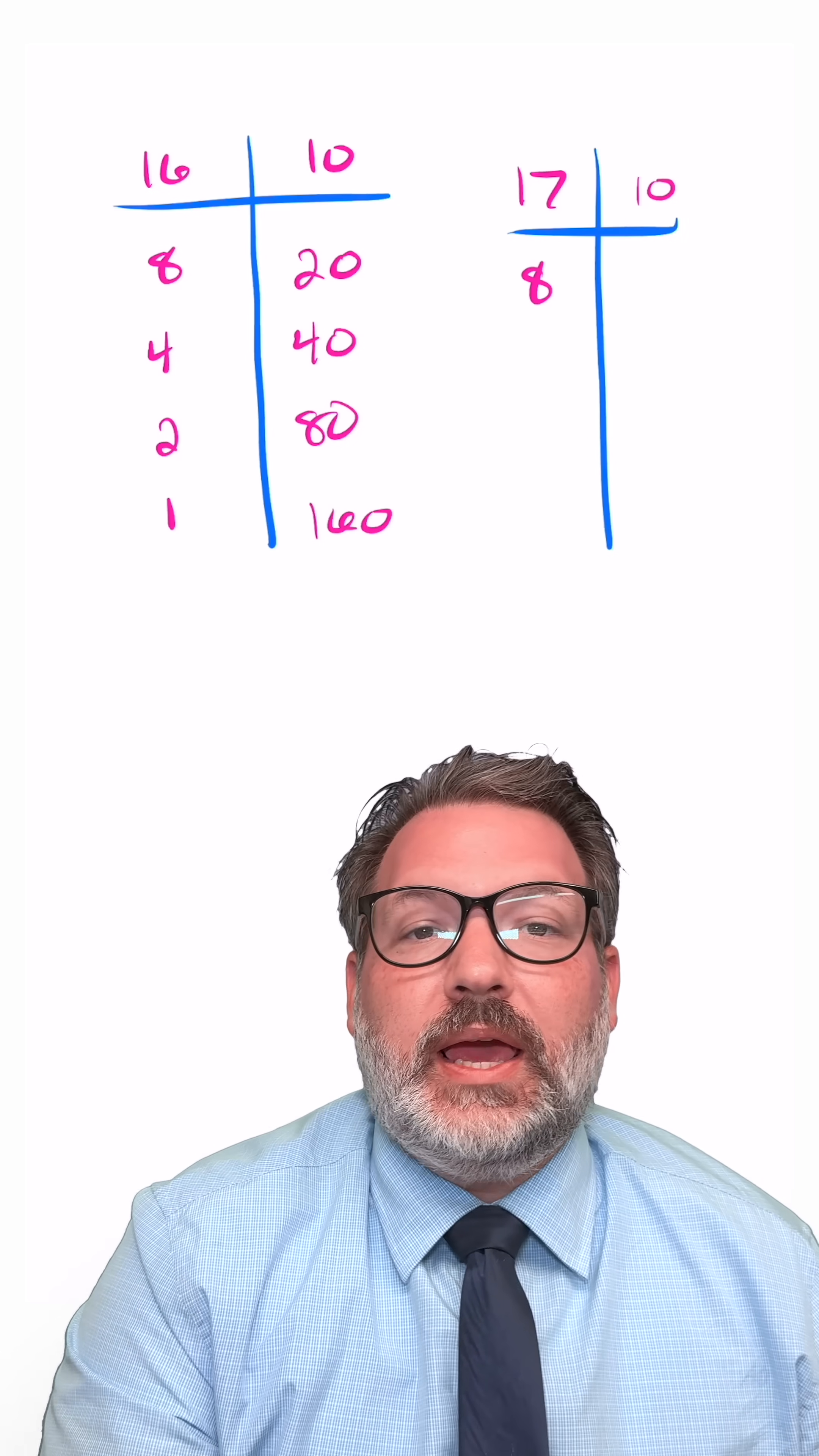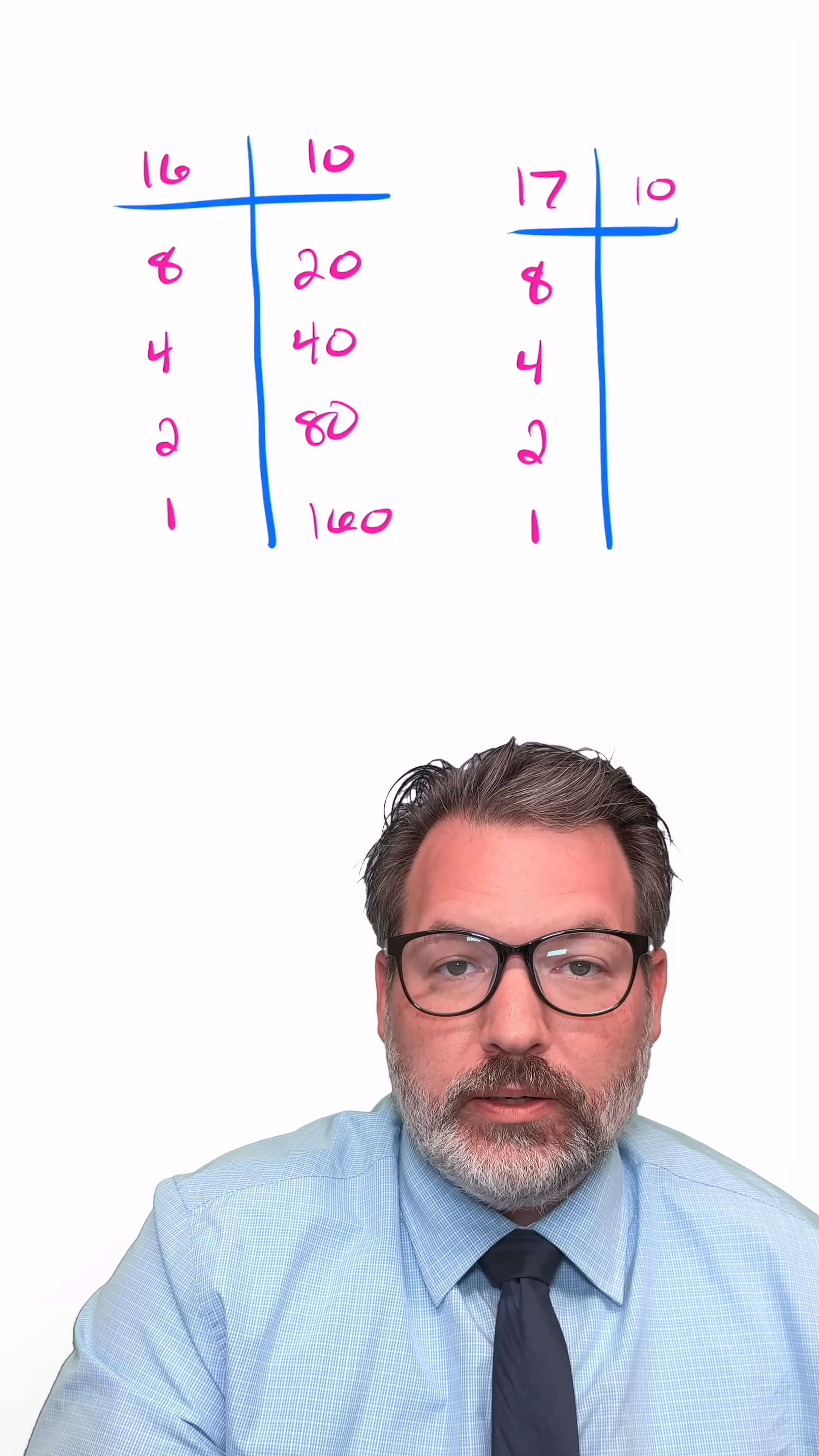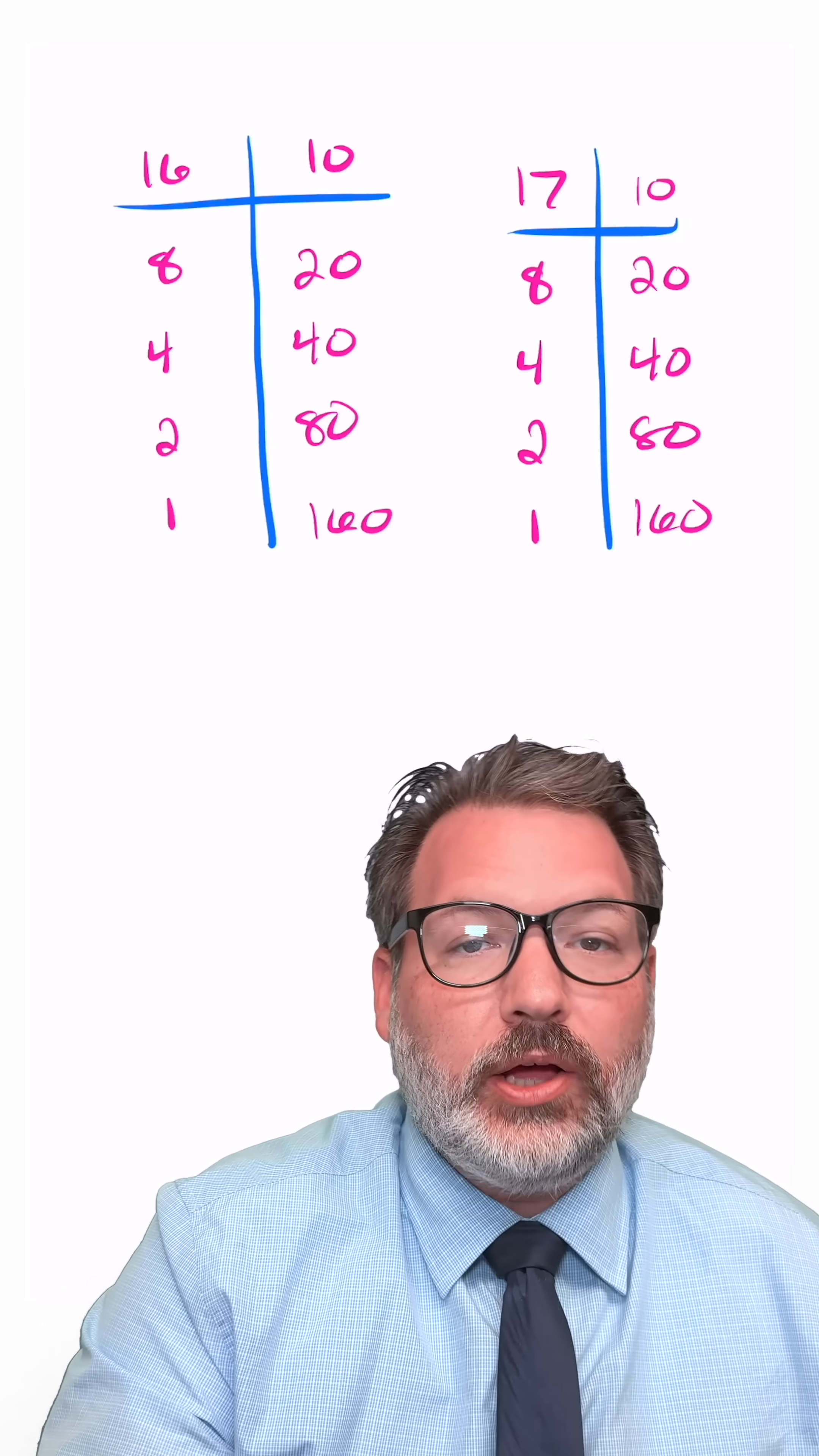17 divided by 2 is 8 remainder 1 but again we don't care about the remainders. 8 divided by 2 is 4. 4 divided by 2 is 2 and 2 divided by 2 is 1. So the left side of our table actually looks quite a bit like it did a moment ago. On the right side same thing we're going to double up for every row we have 10, 20, 40, 80, and 160.